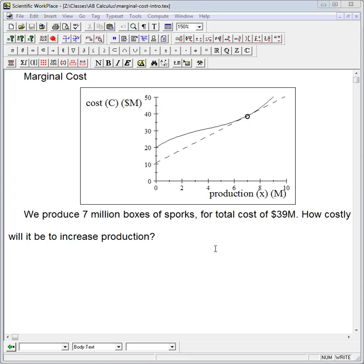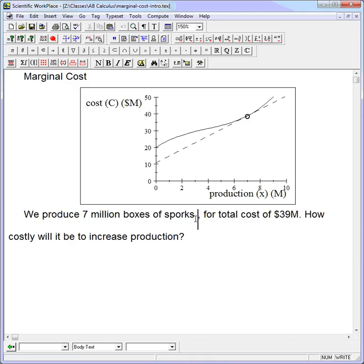Here's a video about marginal cost. Here's the situation: we're selling sporks and we produce 7 million boxes of sporks. Let's say this is every week, and our total cost for each week is $39 million.